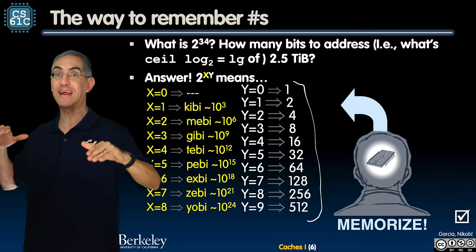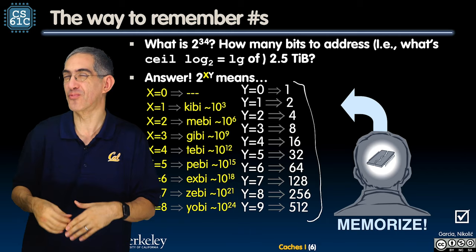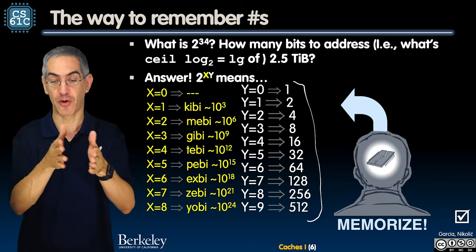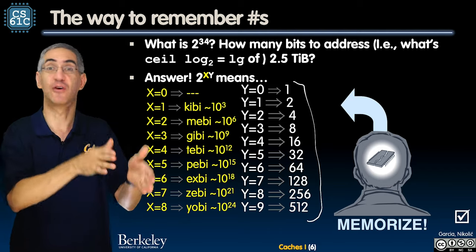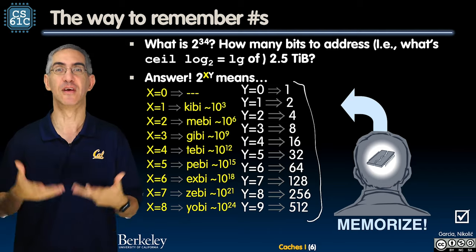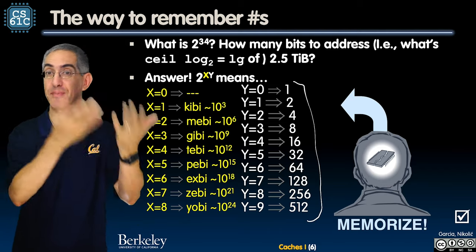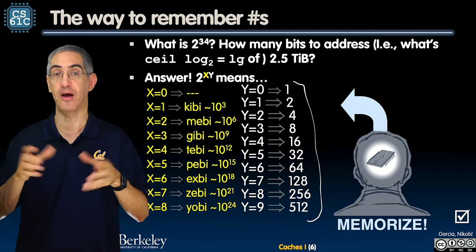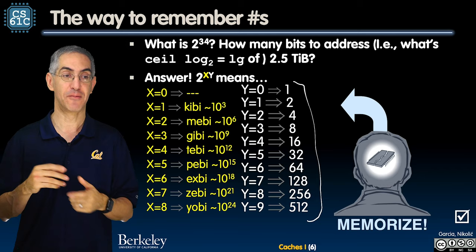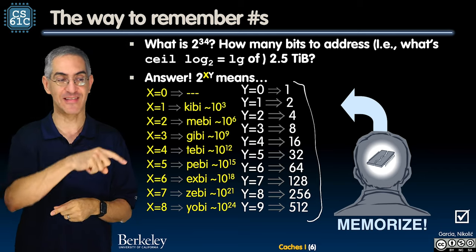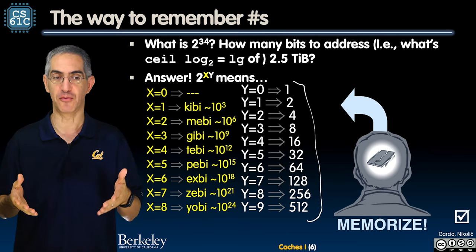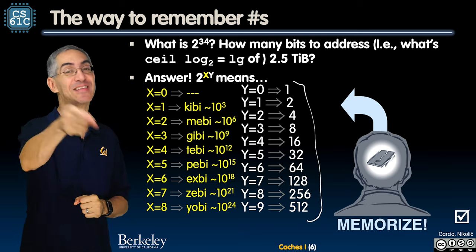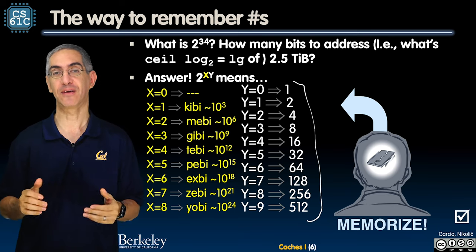We call these IEC numbers, but 'binary prefixes' is the correct naming. This is the beginning lecture on caches — this content could have been placed in the first lecture since binary prefixes are useful from the start, but you don't really need it until caches. We'll see you in the next lecture to learn more about caches.